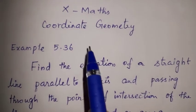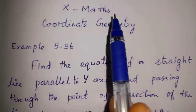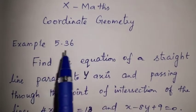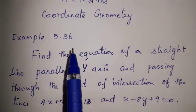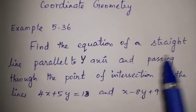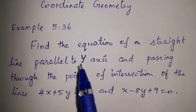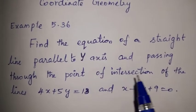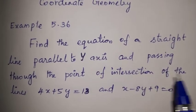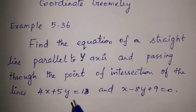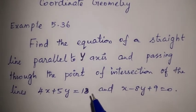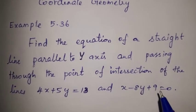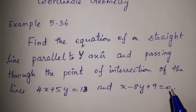Hi viewers, welcome to Tom Math, 10th Standard Maths, Lesson Coordinate Geometry, Example No. 5.36. Find the equation of a straight line parallel to the y-axis and passing through the point of intersection of the lines 4x plus 5y equal to 13 and x minus 8y plus 9 equal to 0.